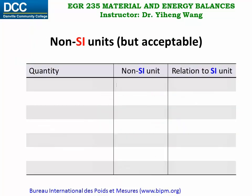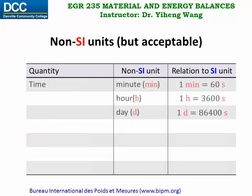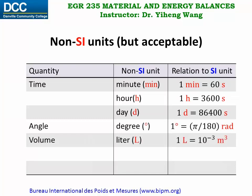In this table I'm going to list some common non-SI units. For example, for time, minute, hour, and day are all units we are very familiar with. For angle, degree is also a common unit. For volume, we have liter, and its derived unit milliliter is also very common. And for mass, we have ton, which is a thousand kilograms.